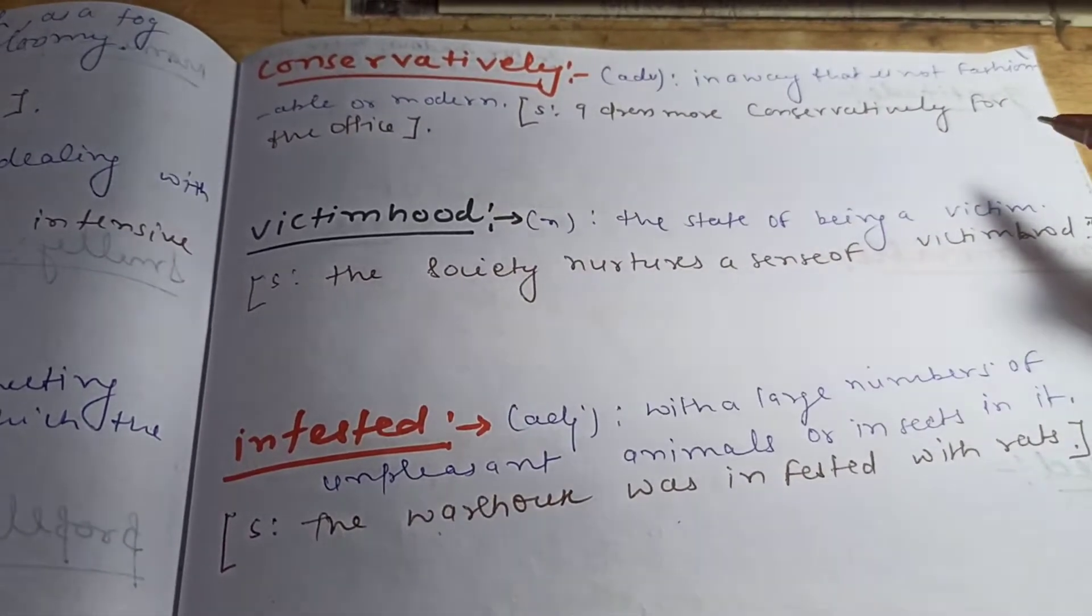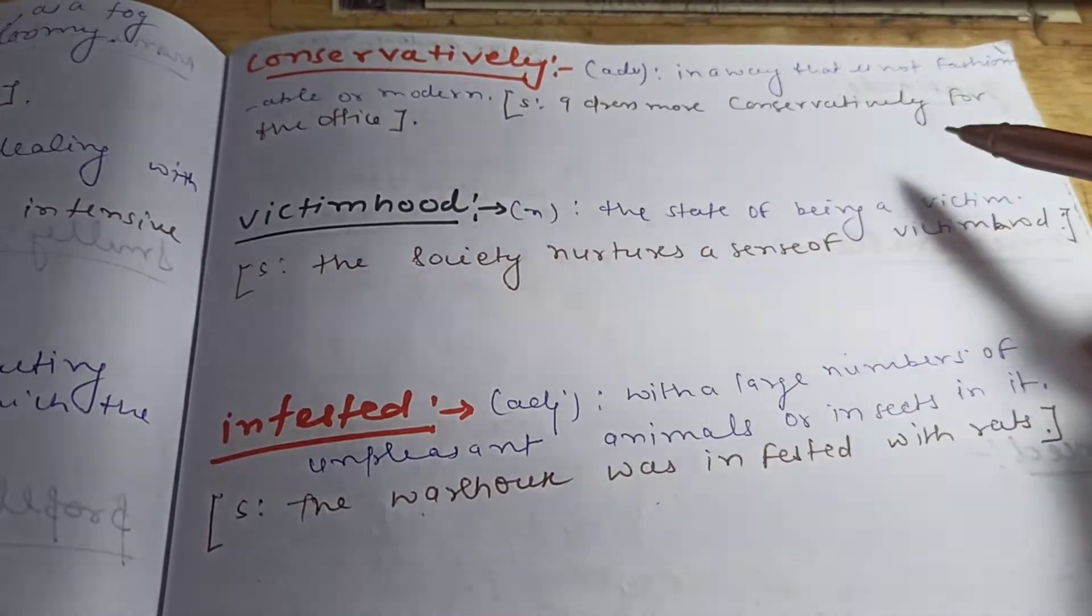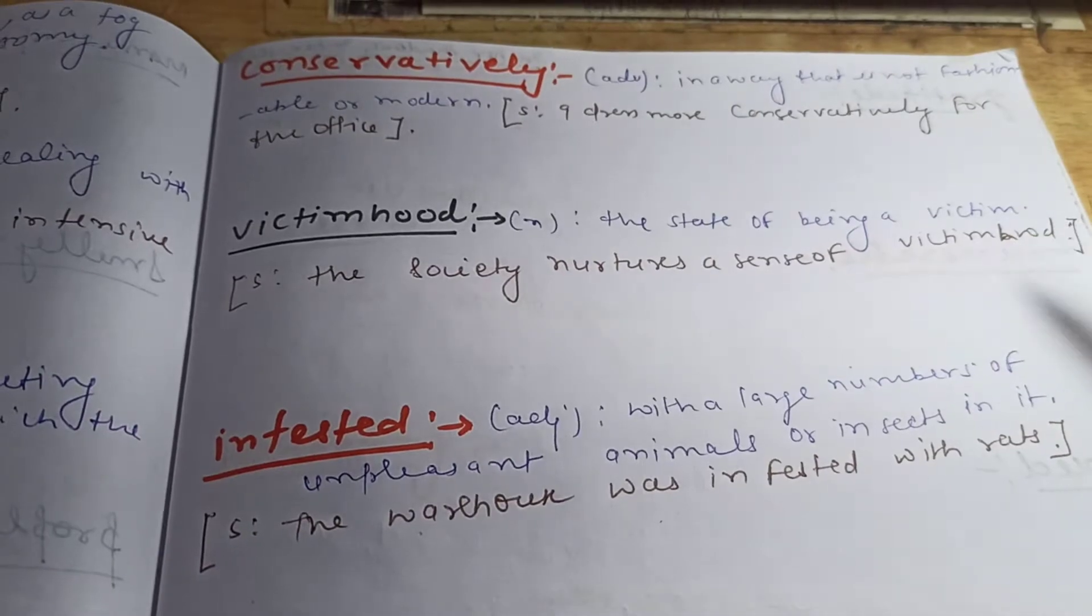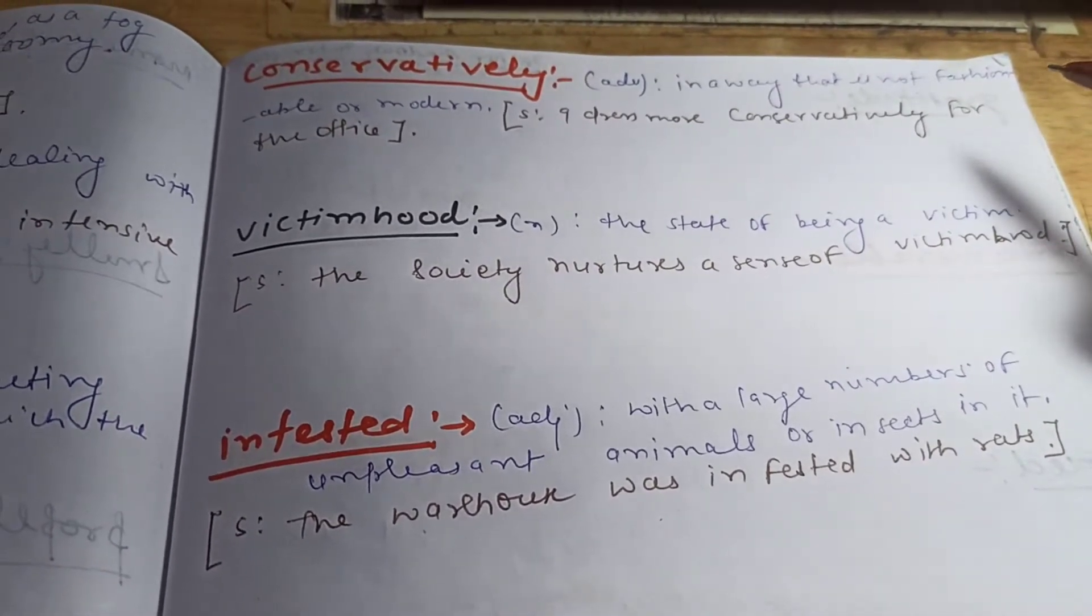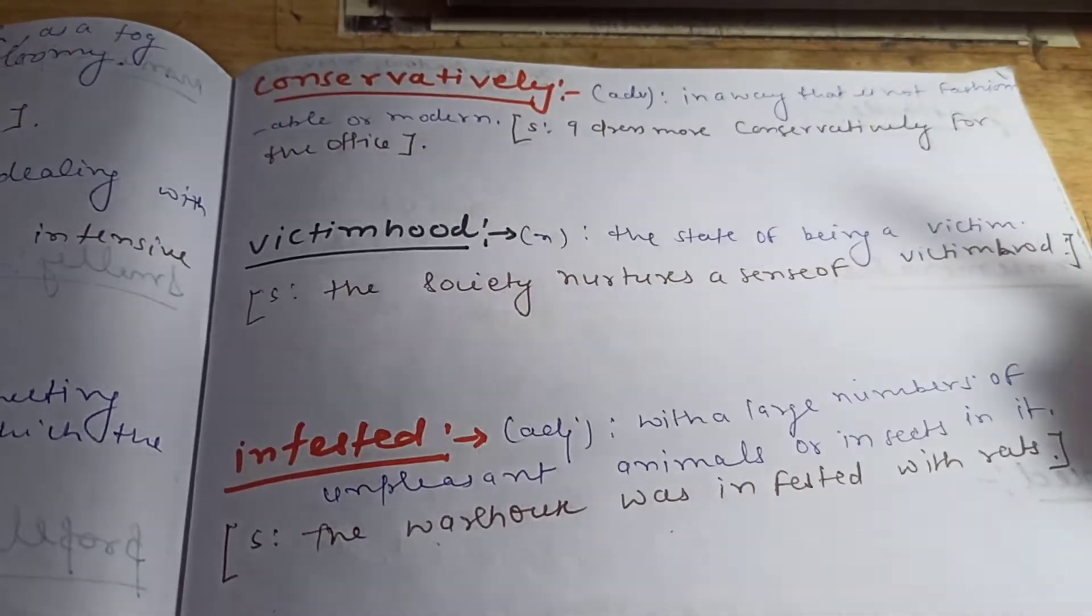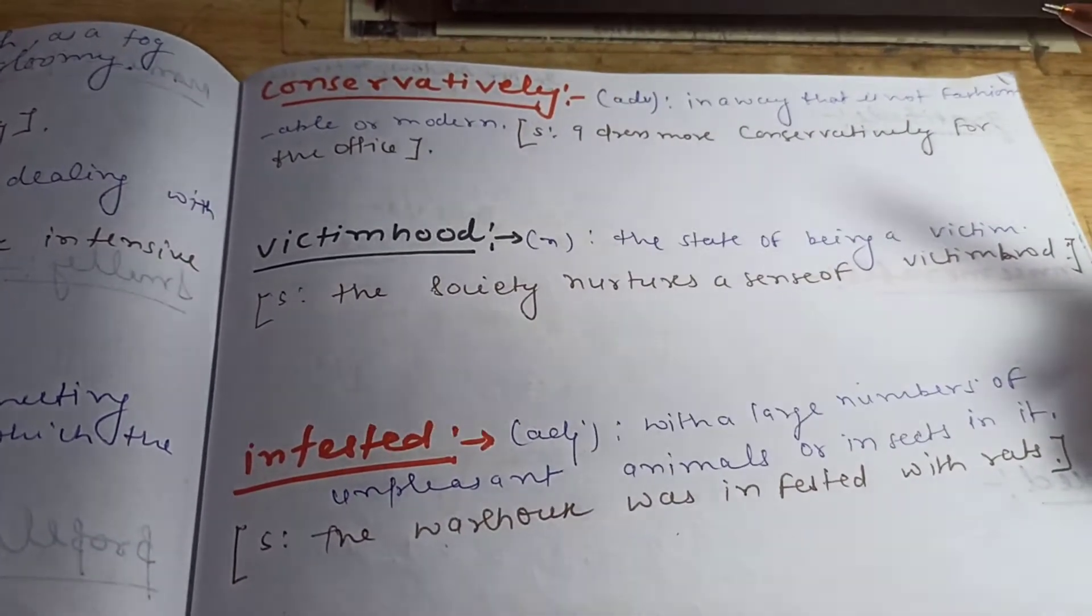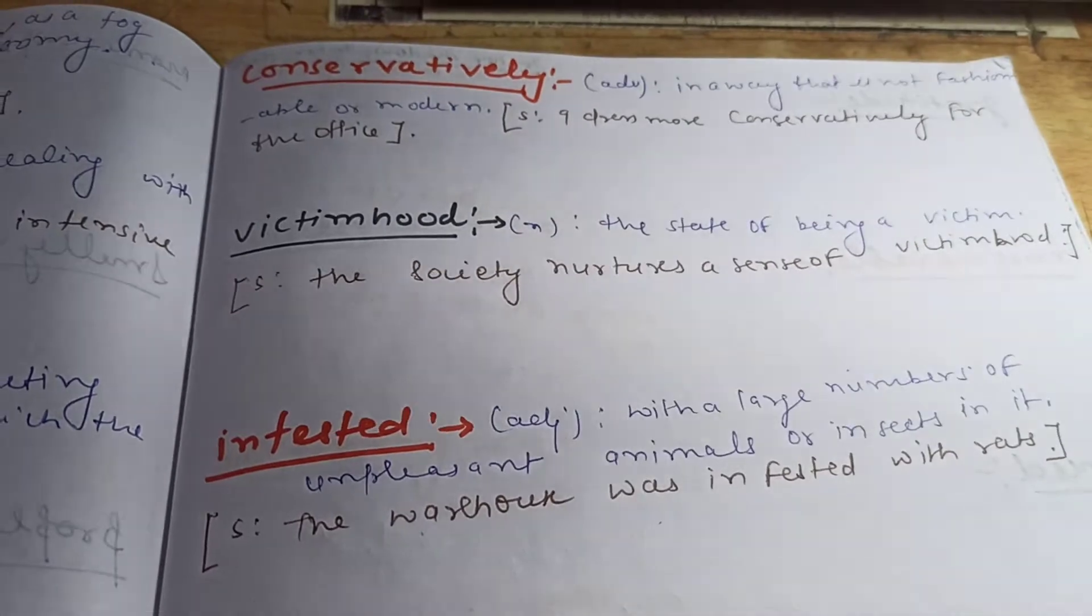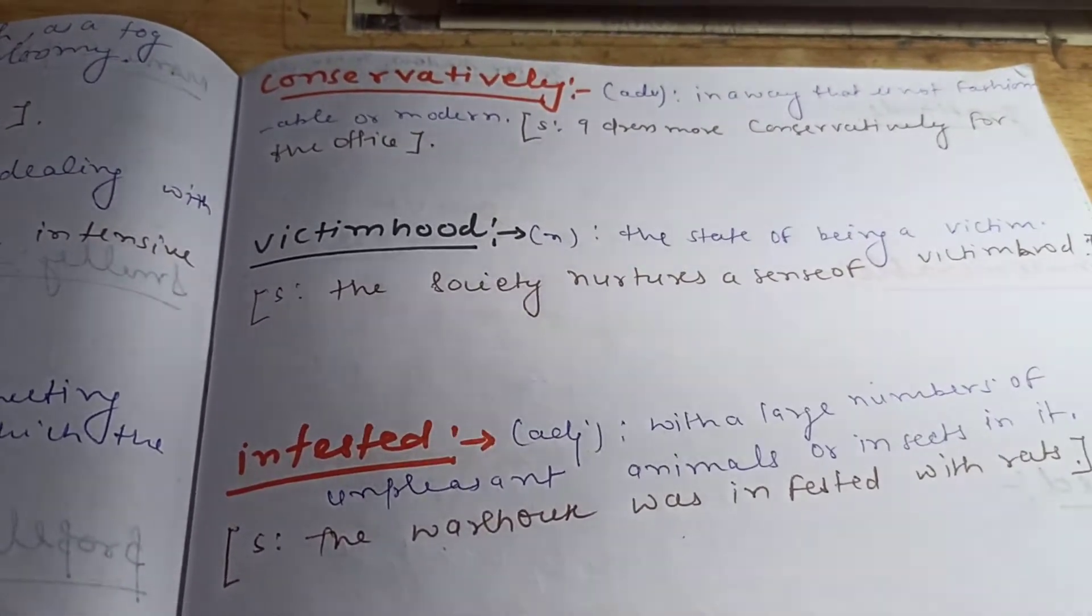The second word is victimhood. This is a noun, and the meaning of this word is state of being a victim. The society nurtures a sense of victimhood. So friends, nowadays we are watching on television that a few people are saying that Rhea Chakraborty is subject of victimhood because her boyfriend has committed suicide and she has become a scapegoat. So this is the perfect example of victimhood.